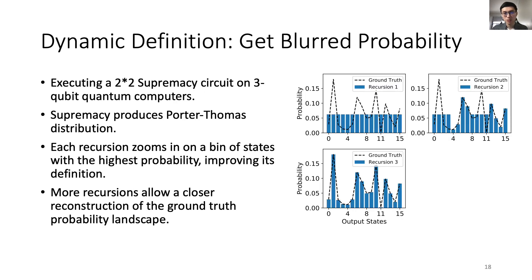This figure shows using DD to get a blurred output for a dense circuit. We are executing a 2-by-2 supremacy circuit on 3-qubit quantum computers. Supremacy circuits produce the Porter-Thomas distribution. Each DD recursion zooms in on a bin of states with the highest probability, improving its definition. More recursions allow a closer reconstruction of the ground truth probability landscape.